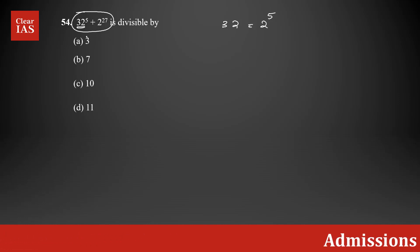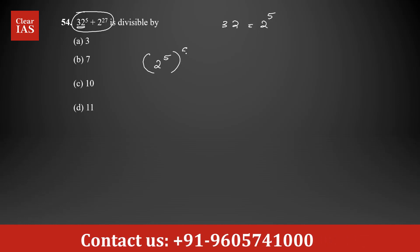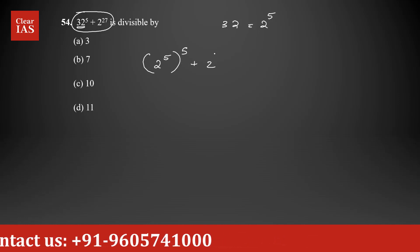Convert both terms into the same base, which is 2, then simplify it further. For 32, I can replace it as 2^5, so it's going to be (2^5)^5 + 2^27.